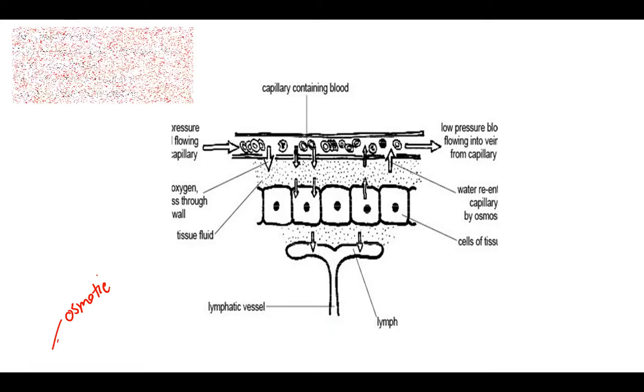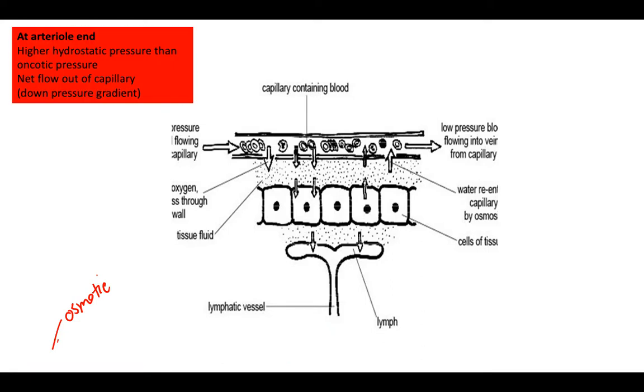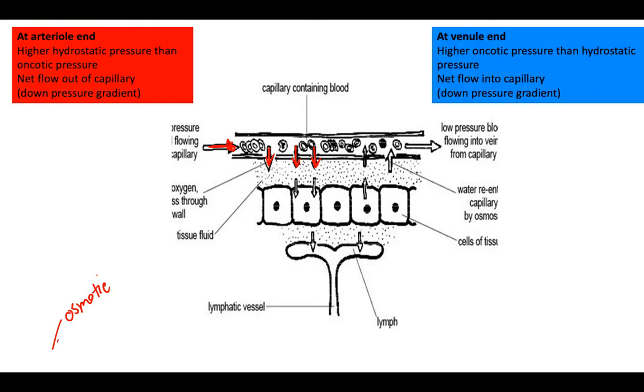At the arterial end, remember arterials connect to arteries which connect to our aorta and heart. There's a higher hydrostatic pressure than oncotic pressure, so we get a net flow out of the capillaries.